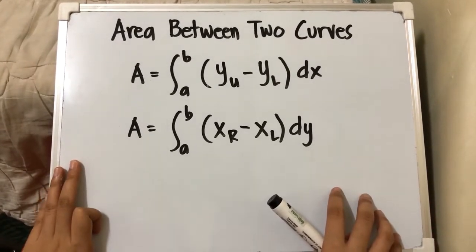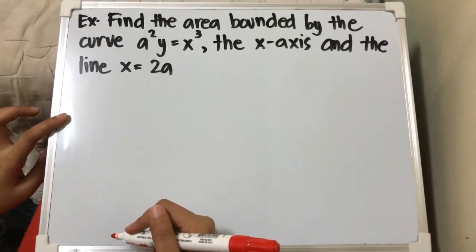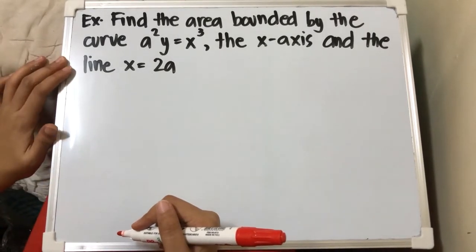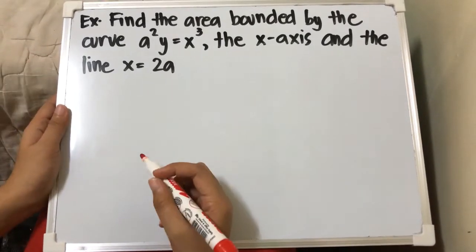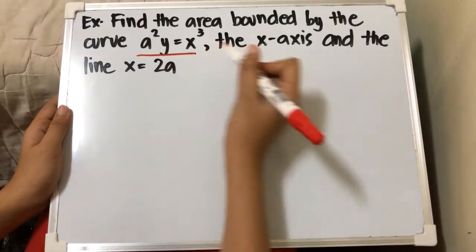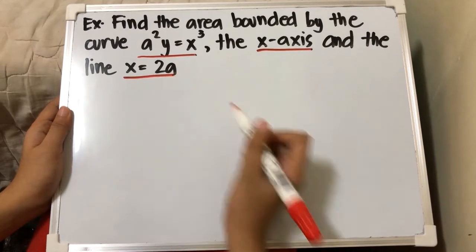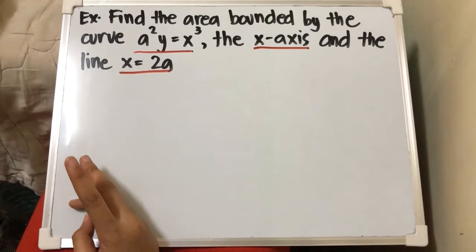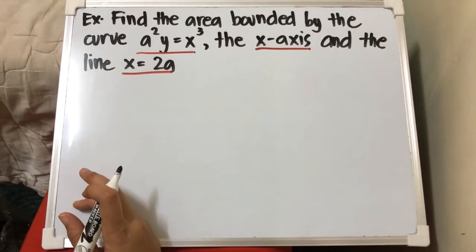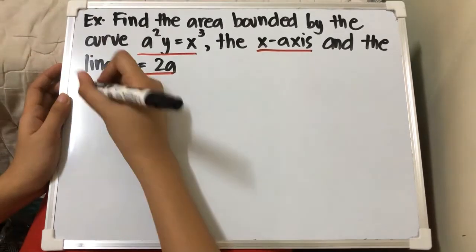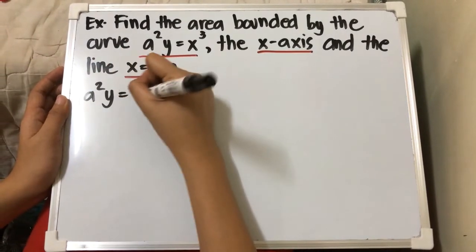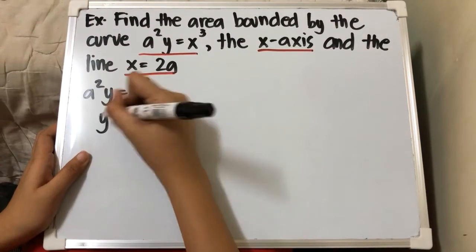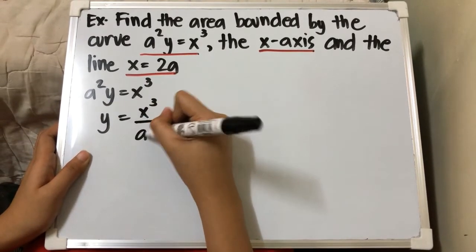We have here an example: find the area bounded by the curve a²y = x³, the x-axis, and the line x = 2a. The boundaries are that equation, the x-axis, and x = 2a. We need to isolate y from a²y = x³, giving us y = x³/a².